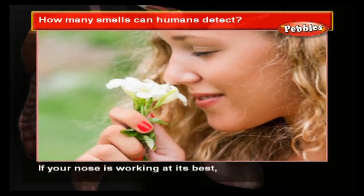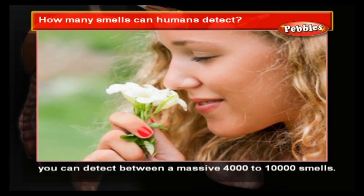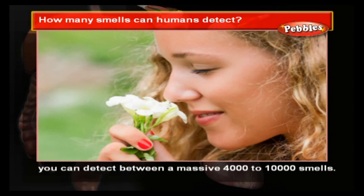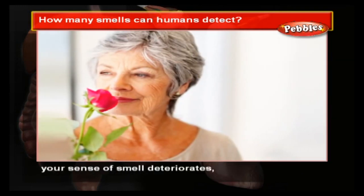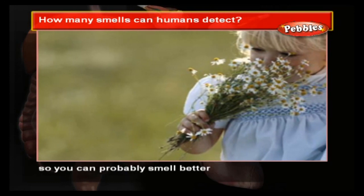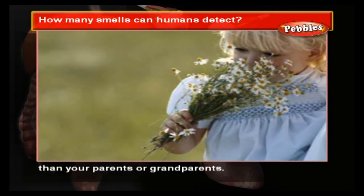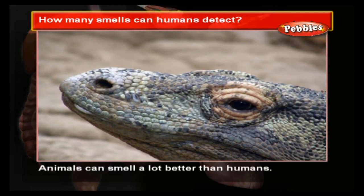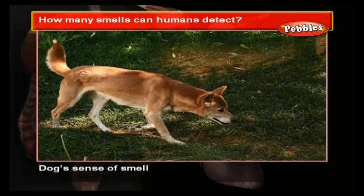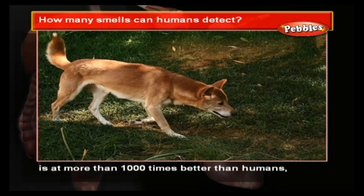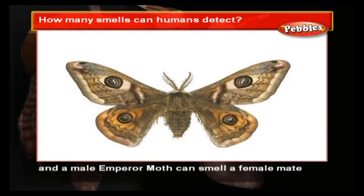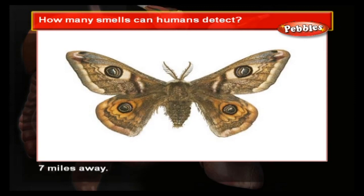How many smells can humans detect? If your nose is working at its best, you can detect between 4,000 to 10,000 smells. As you get older your sense of smell deteriorates, so you can probably smell better than your parents or grandparents. Animals can smell a lot better than humans — a dog's sense of smell is more than 1,000 times better than humans, and a male emperor moth can smell a female mate seven miles away.